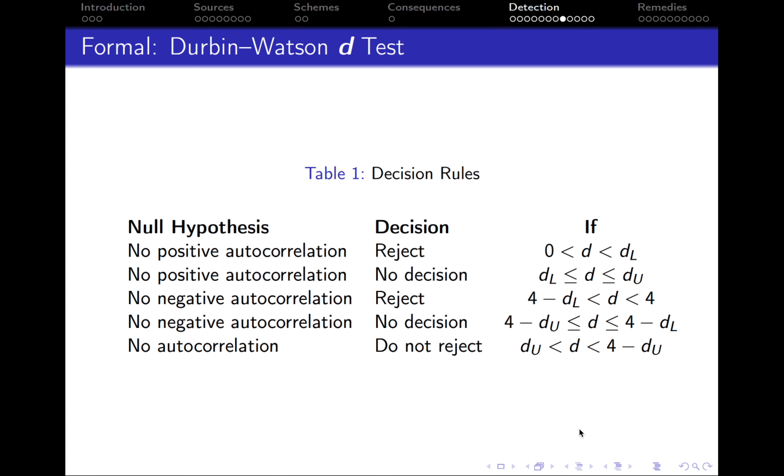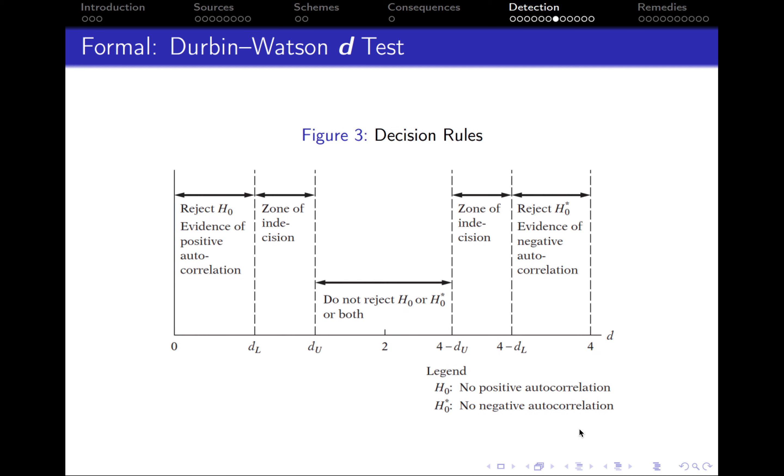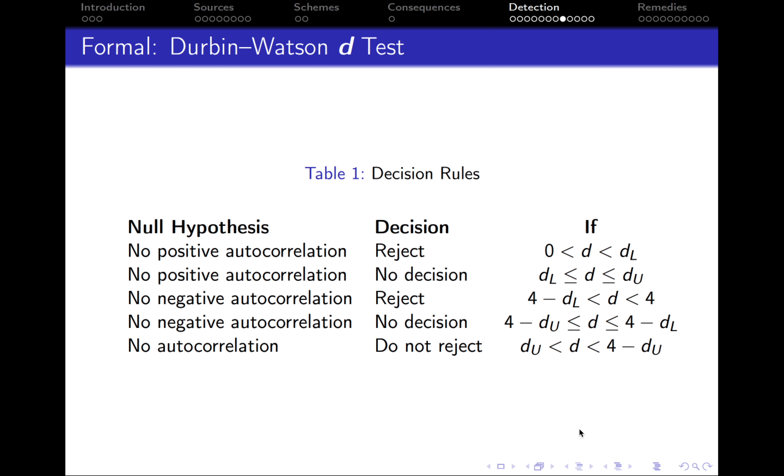Here I have also summarized what I've just said in a table. So it's really up to you which decision rules scheme to use, either the graphical one or the table one. Personally, I prefer the graphical one, but I believe that some of you might find this one more convenient.